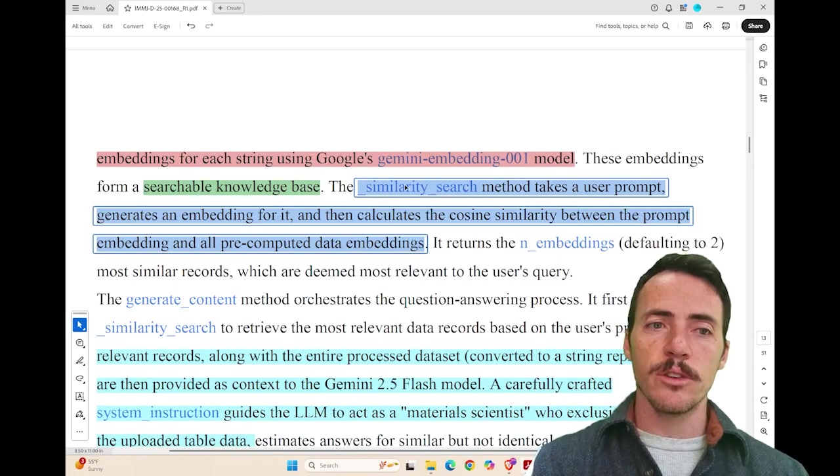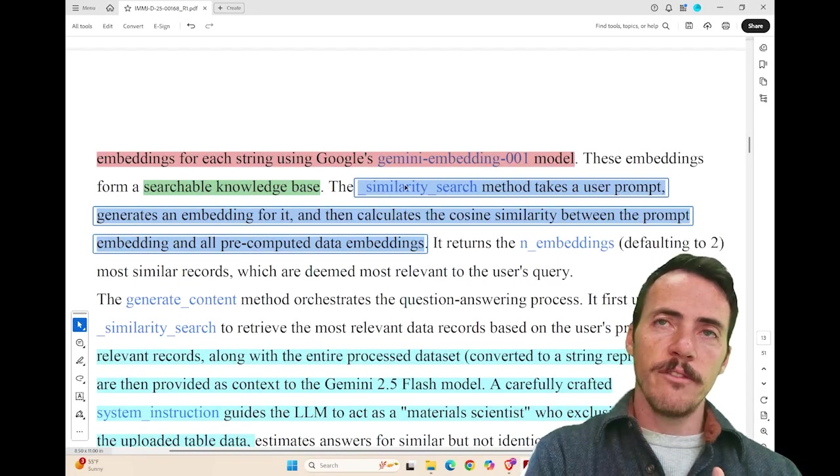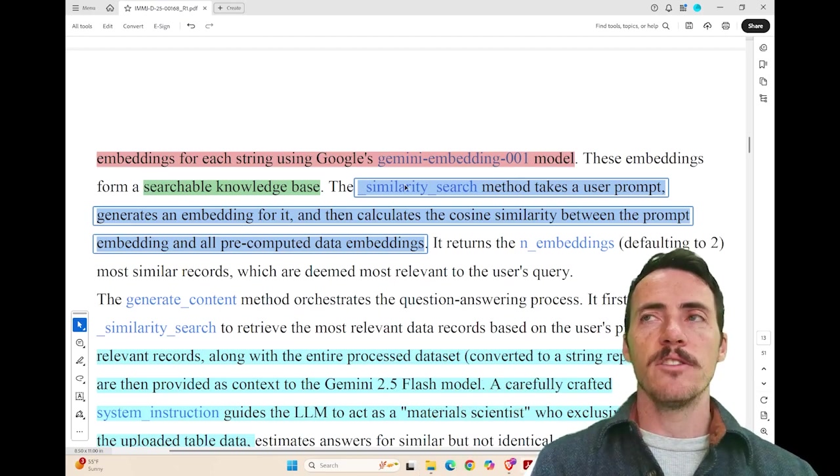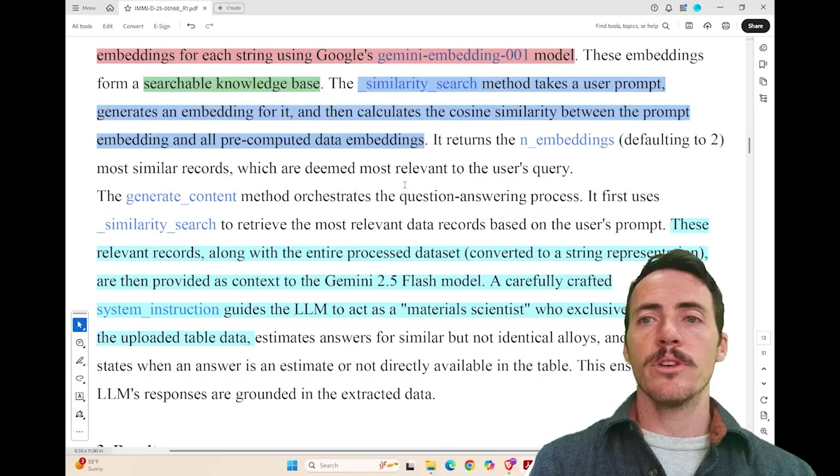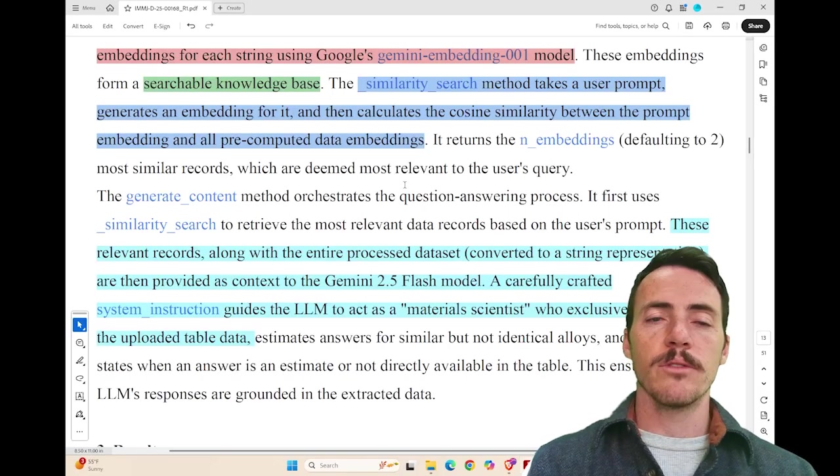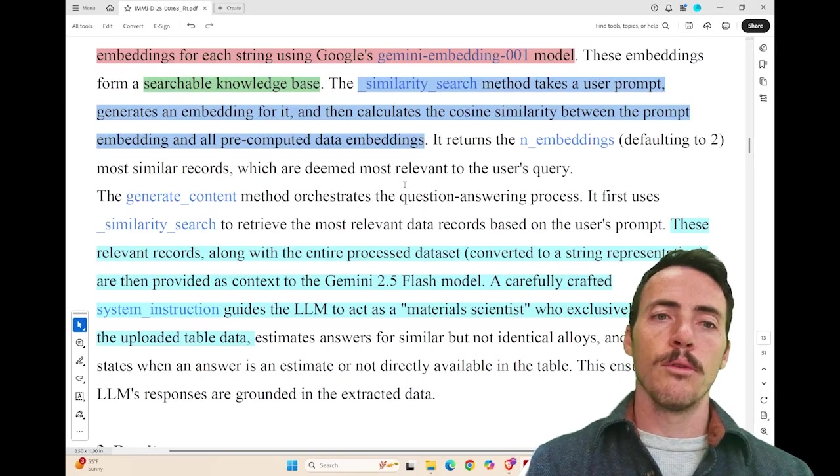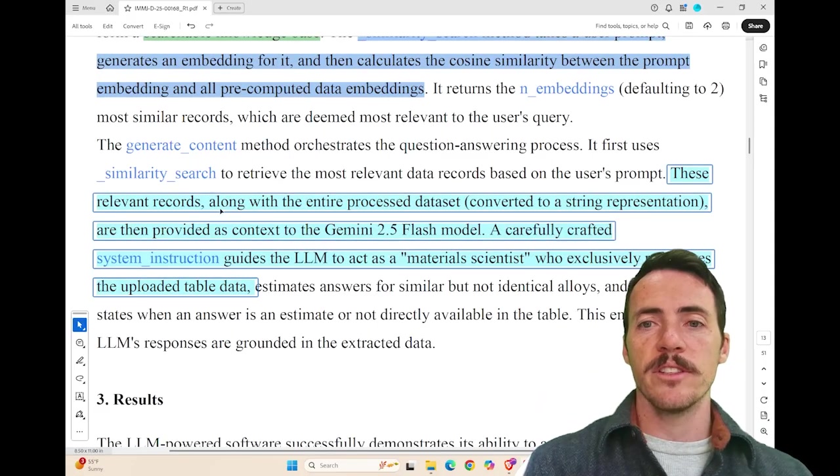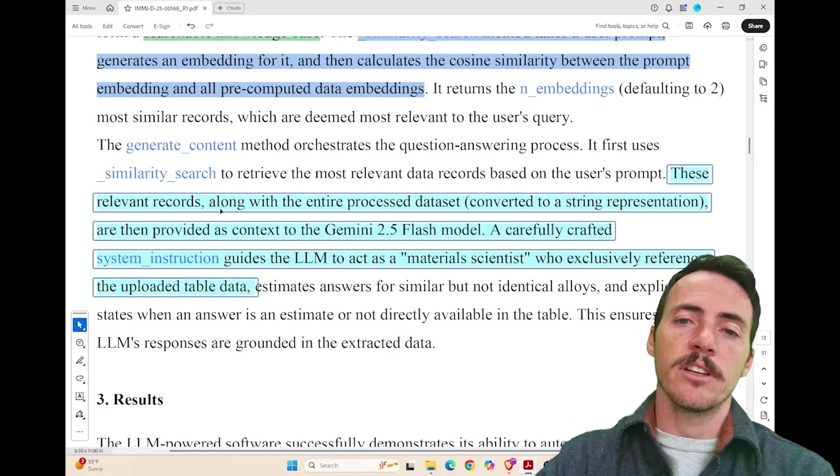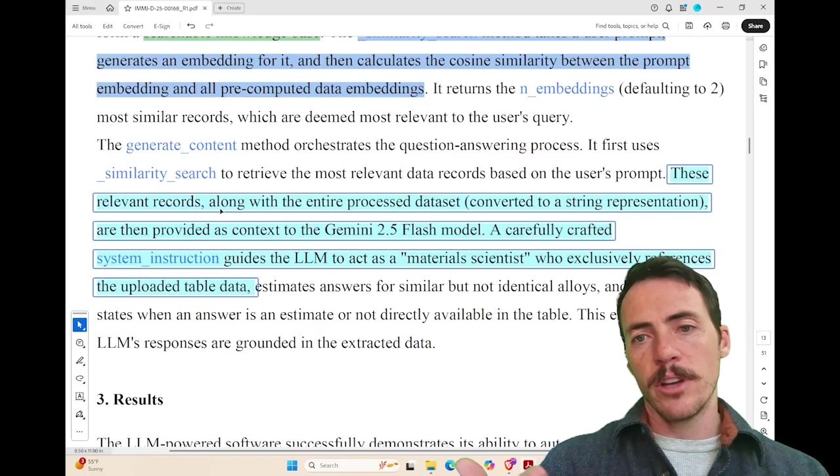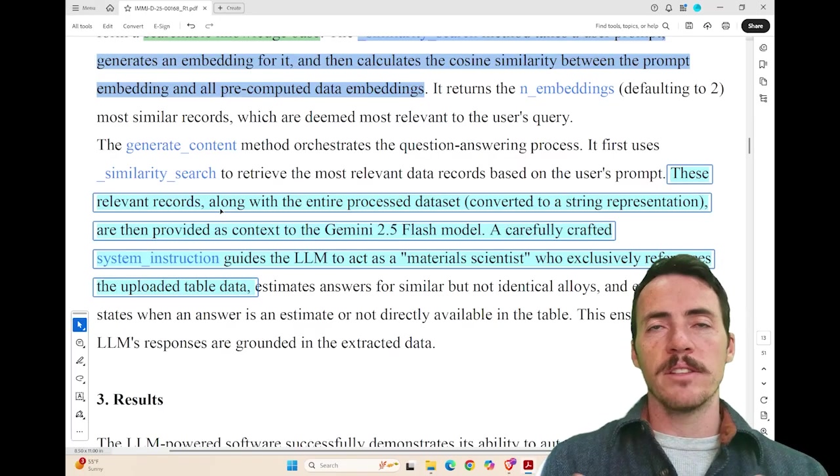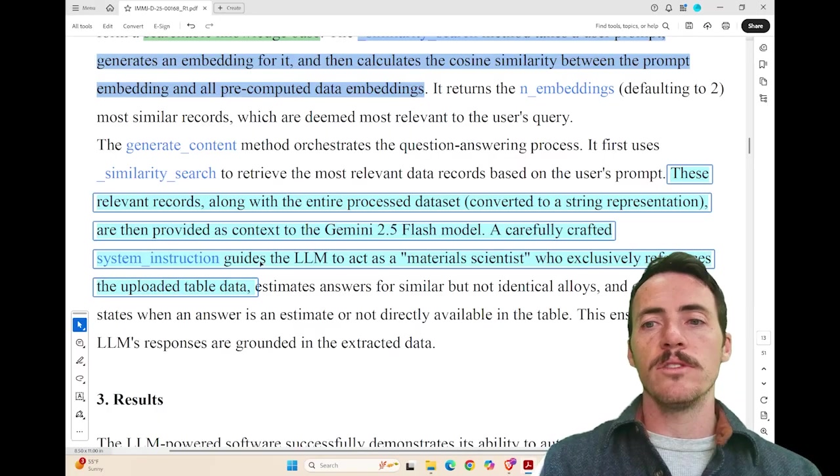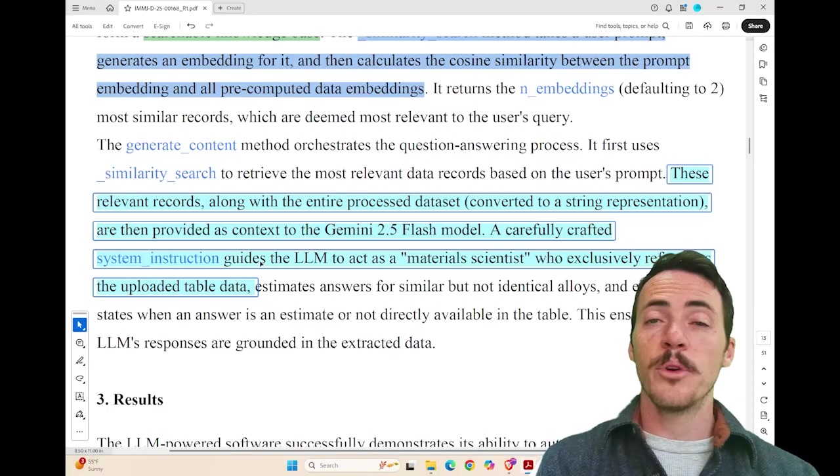They have the similarity search that takes your user's prompt and figures out which chunk of text in this data that you've extracted is the closest match to it. And then it returns n number of those embeddings. So that they have content to pull from. And it says right here, these relevant records along with the entire process data set converted to a string are then provided as the context for the model. And then it has carefully crafted guidelines. It basically tells it to answer the question as if it was a materials scientist who's going to refer exclusively to this data table. Pretty cool.